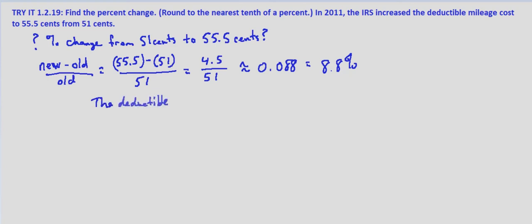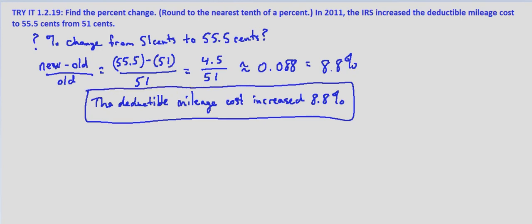So the deductible mileage cost increased 8.8 percent. Another way we could look at this is 4.5, when we find the difference, 4.5 is what percent of 51? That gives us the equation 4.5 equals what percent of 51. If you notice we end up with the same exact fraction. P equals 4.5 divided by 51 which again is approximately 8.8 percent.